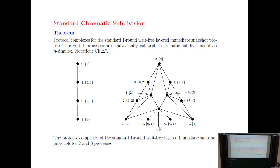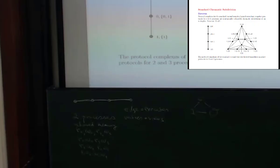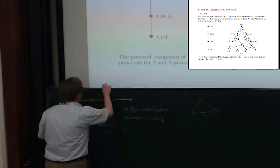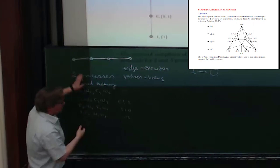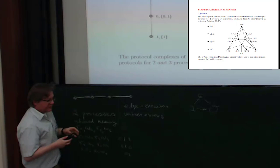In the simplest case of this computational model — which some people simply call the standard model — the executions are simply ordered partitions. For two processes, you encode them as: zero then one, one then zero, or zero-one together as one block. For three processes zero, one, and two, there will be 13 ordered partitions.